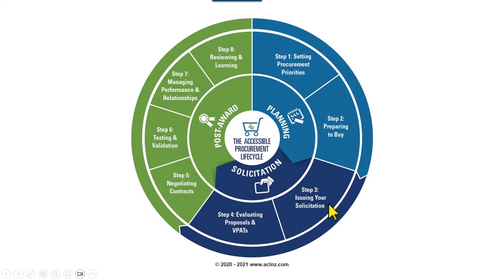Step three is issuing your solicitation, which is the stage where supplier identification, qualification, and approval will happen. Issuing the solicitation means issuing the RFQ or an auction process to the supplier, and the supplier will respond in the form of a quotation or a bid. That's where the next step comes in: evaluation of proposals received from the suppliers. The quotation or bid received from the supplier will be evaluated and shortlisted.